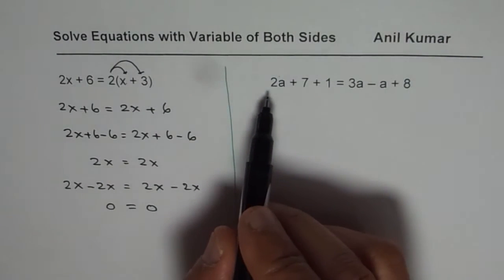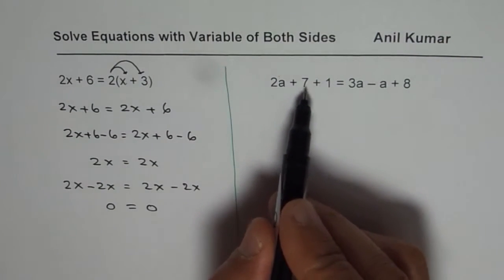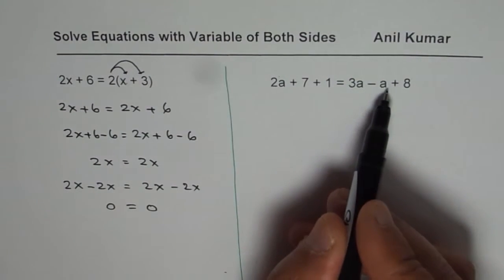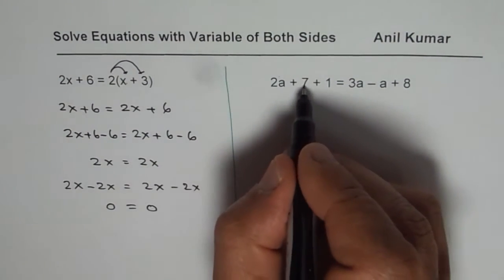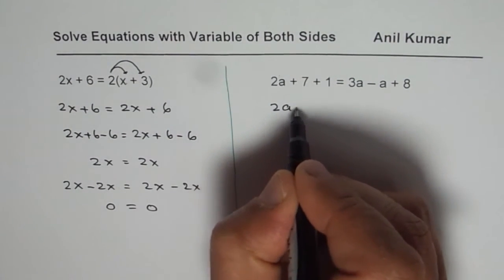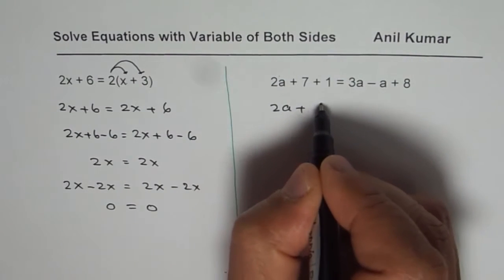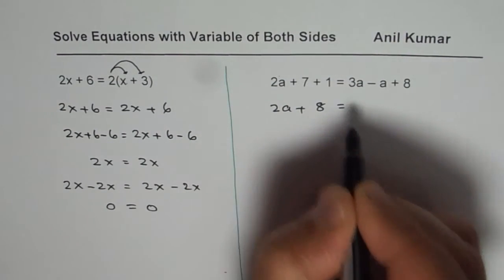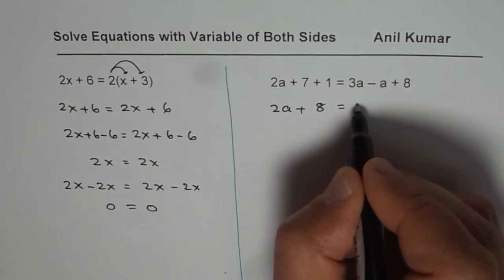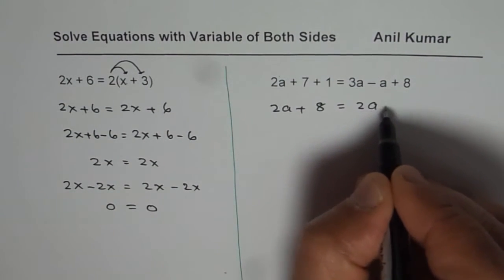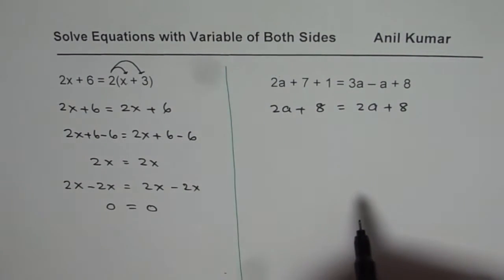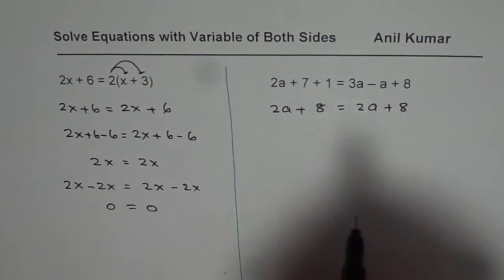Now here we have 2a plus 7 plus 1 equals to 3a minus a plus 8. We can simplify this: on the left side, 7 plus 1 is 8, giving us 2a plus 8. On the right side, 3a minus a is 2a, so we have 2a plus 8. It looks similar to the previous one.